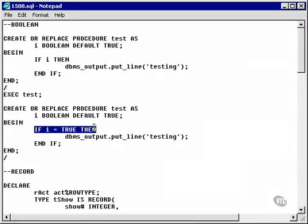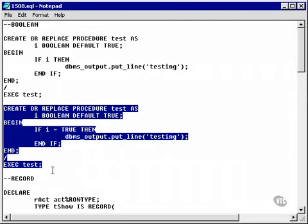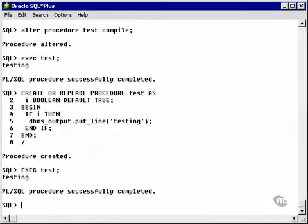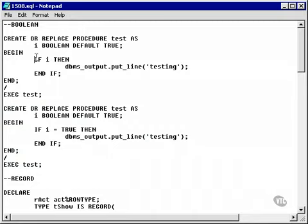Let's go and change this because we can do the same thing by simply asking the Boolean variable if it is true, as in if I equals true. This will work as well. Now, let's copy the exec test command, recreate and replace the procedure, recompile it and re-execute it, and I get exactly the same result. In other words, either this syntax or this syntax is fine as far as PL/SQL is concerned.